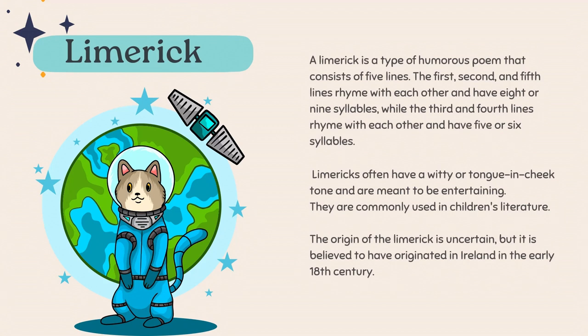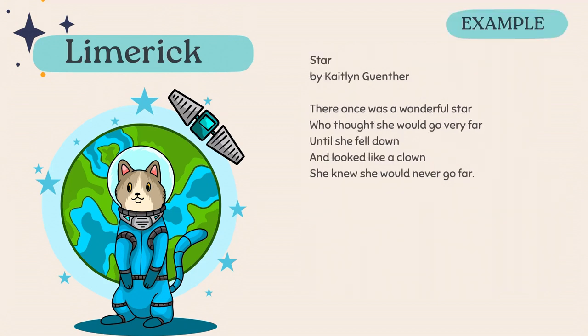We don't know exactly where the limerick originated, although there's a very good possibility that Limerick, Ireland was the place of origin. Here's an example of a limerick — I think this is a student example, which is kind of nice. It's called Star: 'There once was a wonderful star, who thought she would go very far. Until she fell down and looked like a clown, she knew she would never go far.' Again, the first, second, and fifth lines rhyme and have slightly longer lengths, and the third and fourth lines rhyme and have slightly shorter lengths.